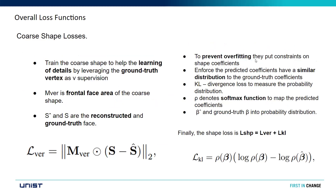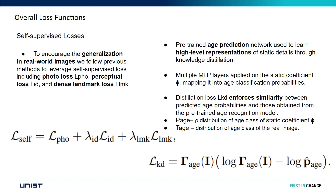They also have a coarse shape loss function — they calculate the L2 norm between the reconstructed and ground truth shapes. They also introduce a KL divergence loss, which measures the probability distribution between two functions, helping to prevent overfitting as shown by experiment. The KL loss function applies a softmax to make the ground truth and predicted coefficient probability distributions similar. They also use a self-supervised loss that calculates photo loss, perceptual loss, and dense landmark loss.